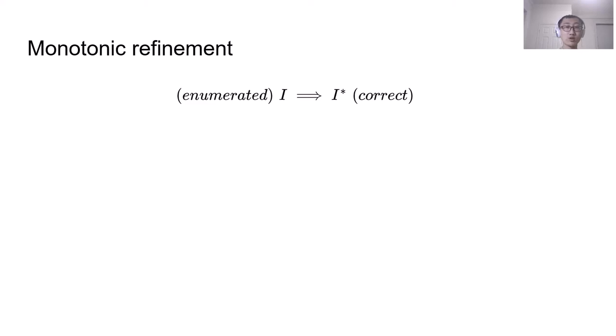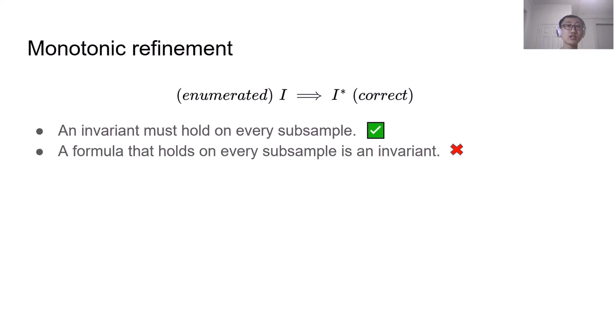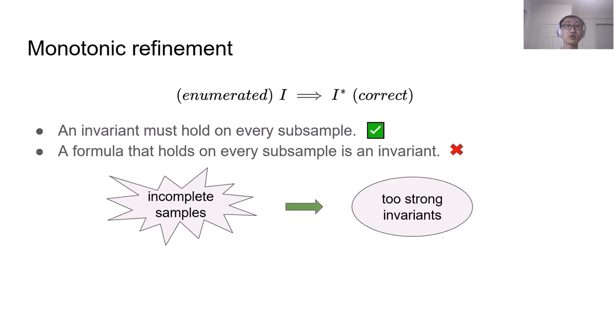Recall that our enumerated invariants are at least as strong as the correct invariants. But they may be too strong and mistakenly reject some valid reachable states. To see how this happens, note that an invariant must hold on every subsample, this is true. But conversely, a formula that holds on every subsample is an invariant is not correct. This is because we have incomplete samples. A protocol can have infinite system states, but our simulation can only reach a fraction of them. Incomplete samples lead to too strong invariants. So some of our invariants may be correct on all subsamples, but it might be broken on some protocol states that we have not discovered during sampling.